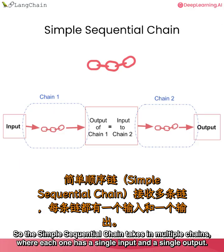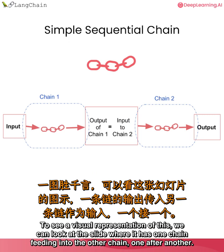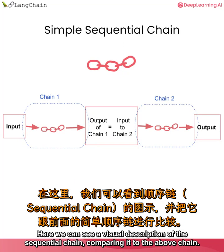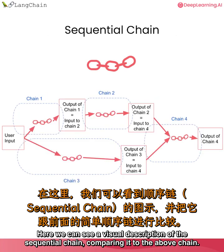The simple sequential chain takes in multiple chains where each one has a single input and a single output. To see a visual representation of this, we can look at the slide where it has one chain feeding into the other chain one after another. Here we can see a visual description of the sequential chain.